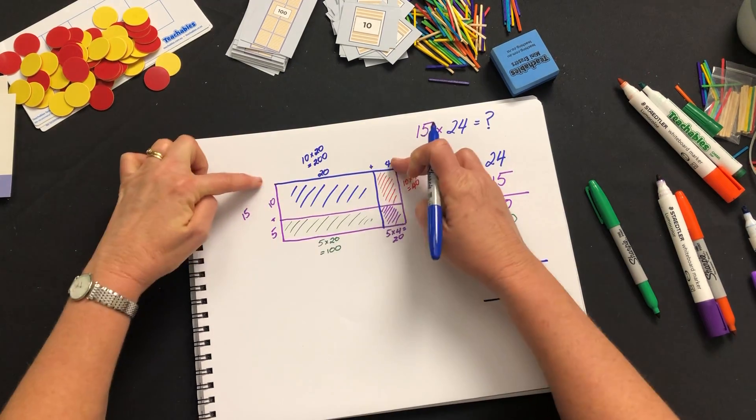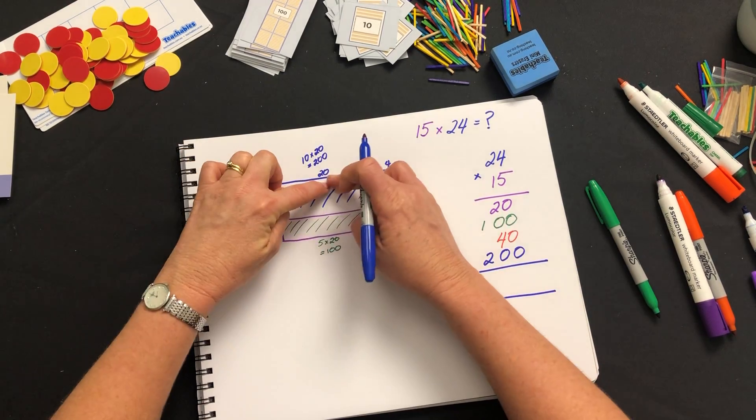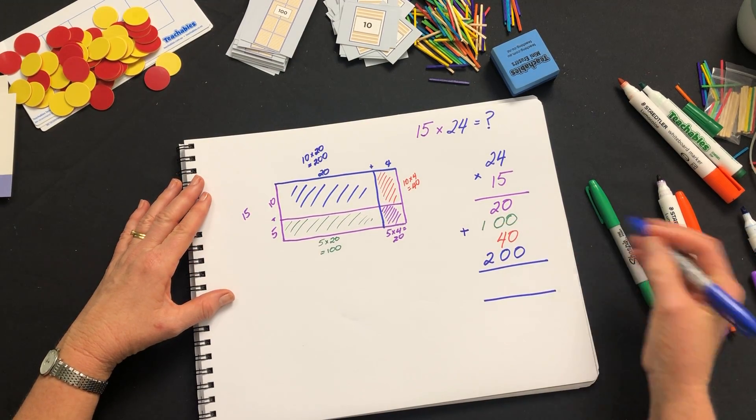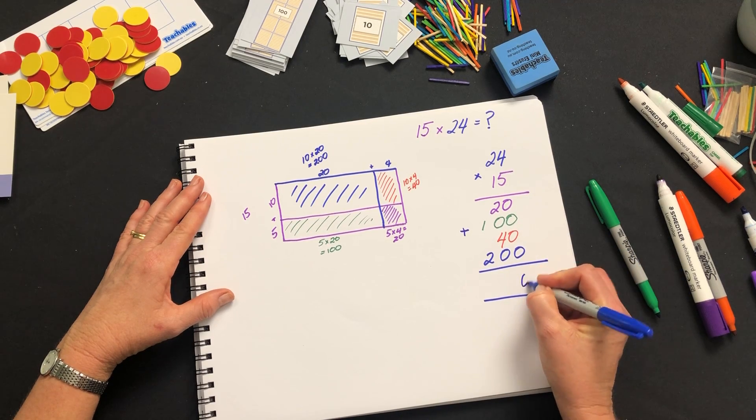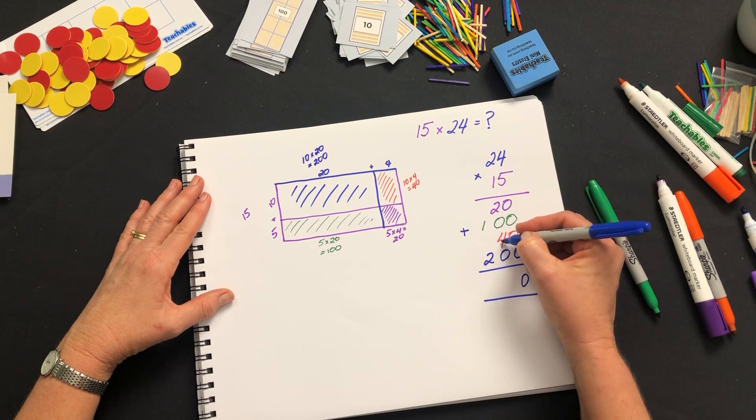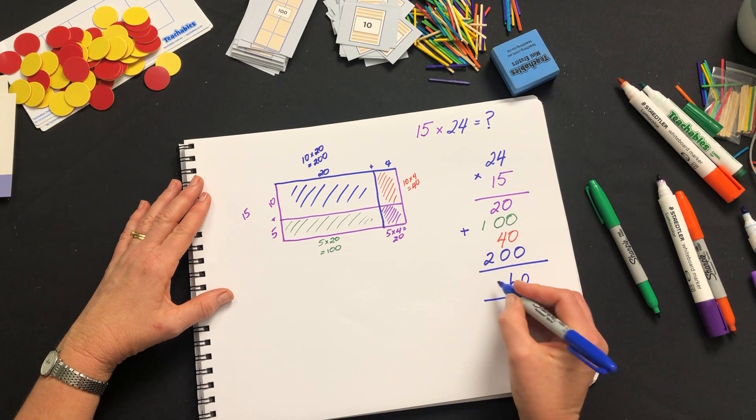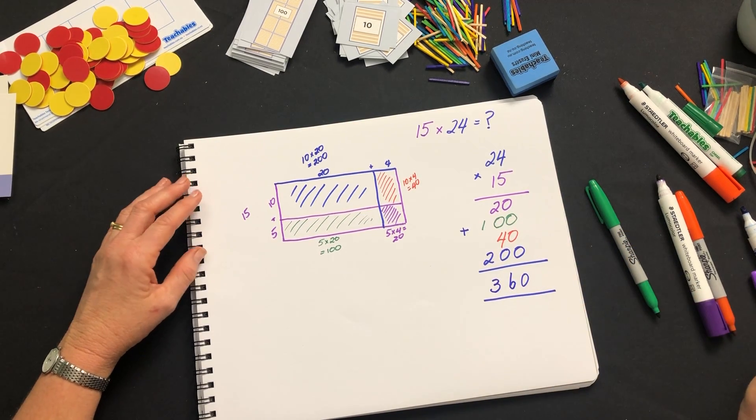Now because we want the entire rectangle we have to add the four rectangles together. 0, 20 and 40 will give us 60. 100 and 200 will give us 360.